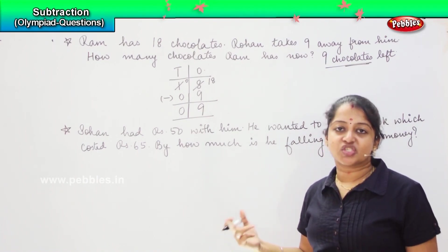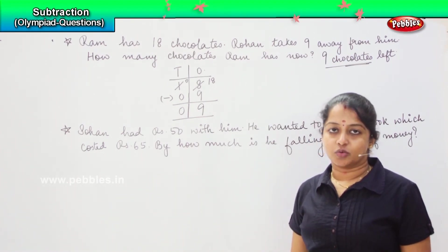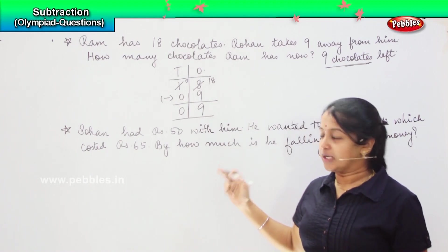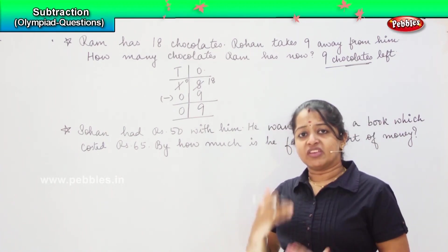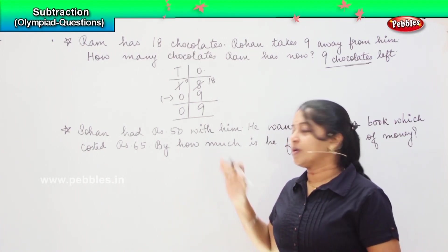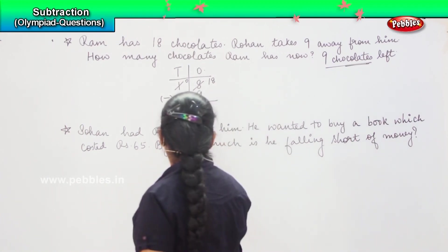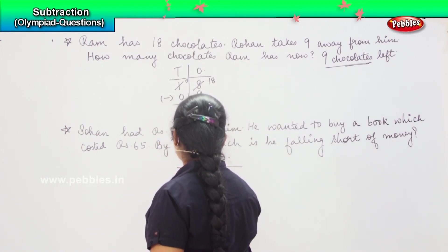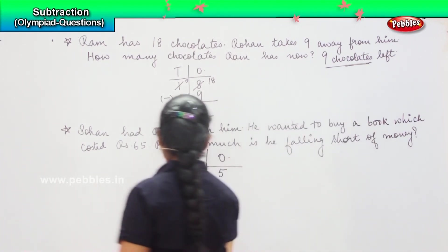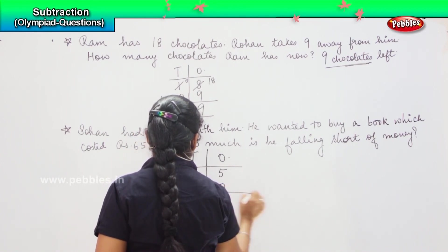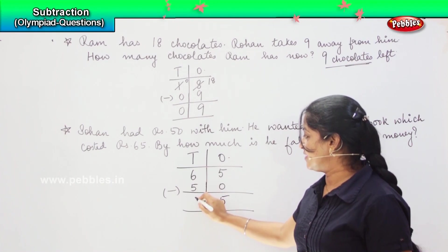So, he has to get some extra amount in order to purchase that book, and you need to find out what is that extra amount which he has to fetch. Always in subtraction, keep in mind that the bigger number will be the first one and then comes the smaller. That is not possible to shuffle the numbers — in subtraction, always from the higher number you will be reducing the lower number. So, here first tens, ones. The bigger number here is 65.